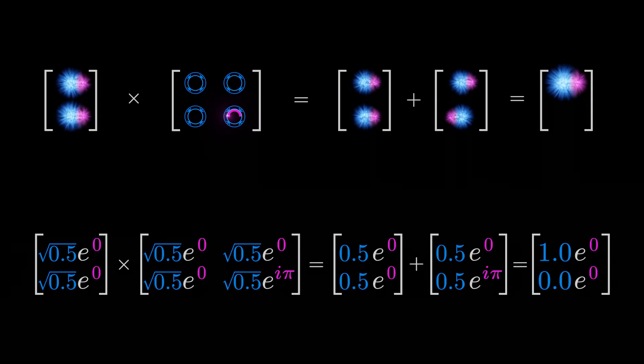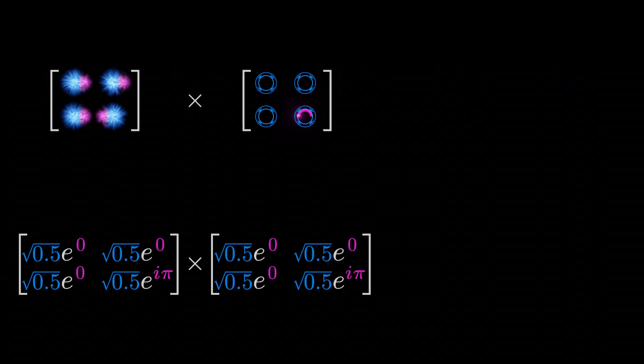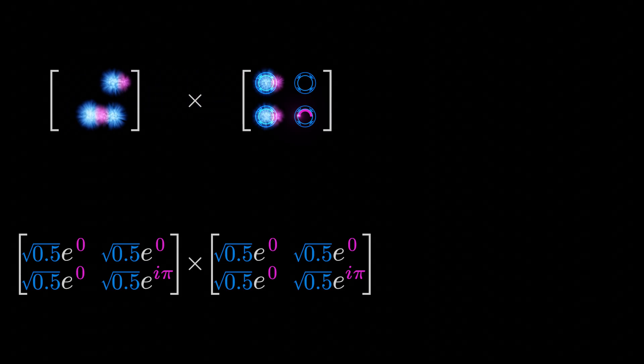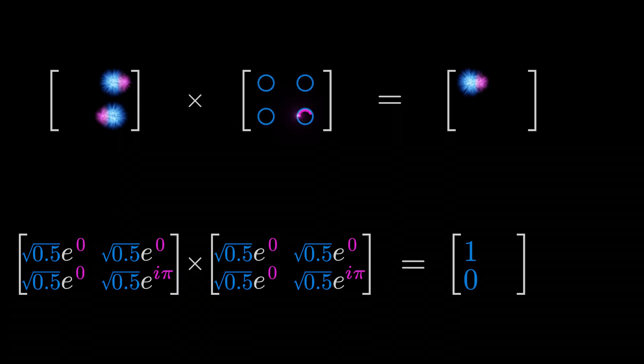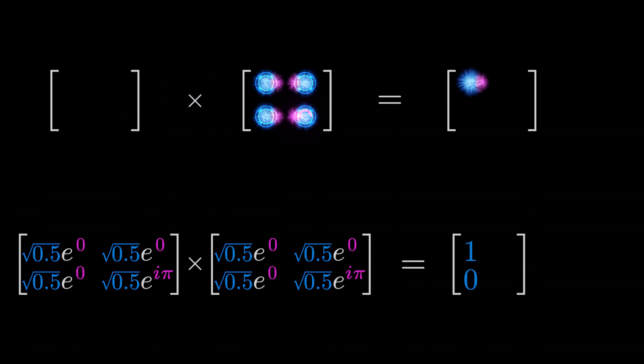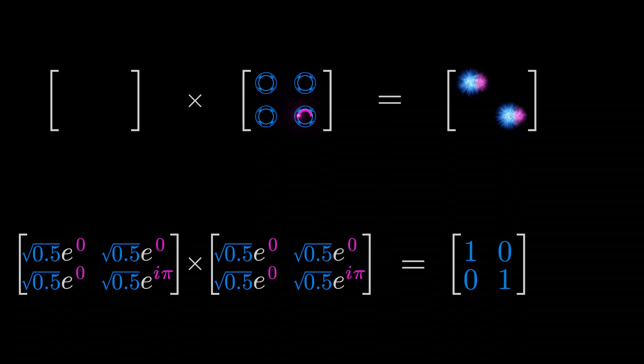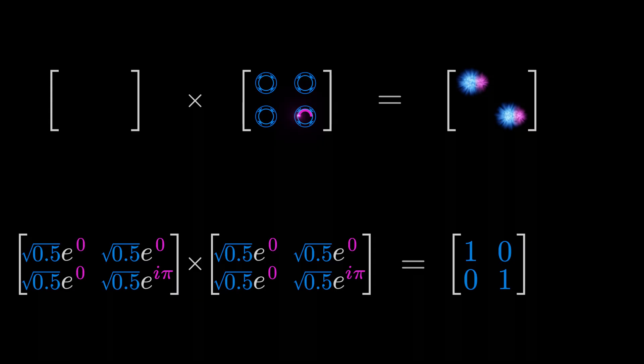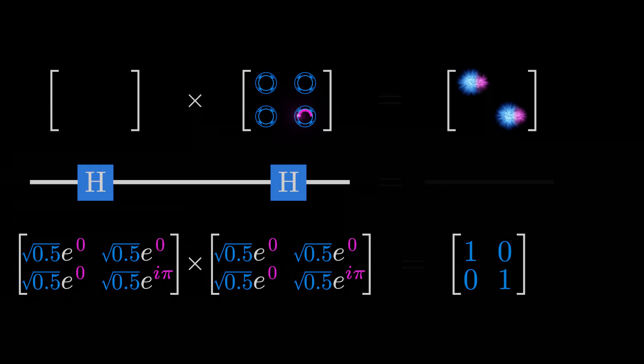A nice example of the mathematical power this work has gotten us is that multiplying this Hadamard matrix by itself gives us an identity matrix, that is one that causes no change when multiplied by a vector. This is an elegant proof that using the Hadamard gate twice in a row produces no change.